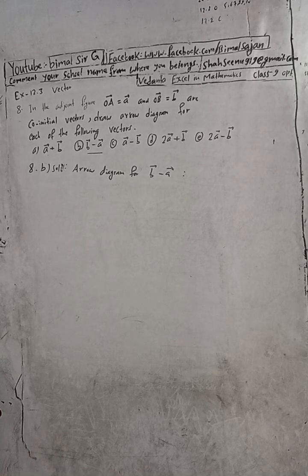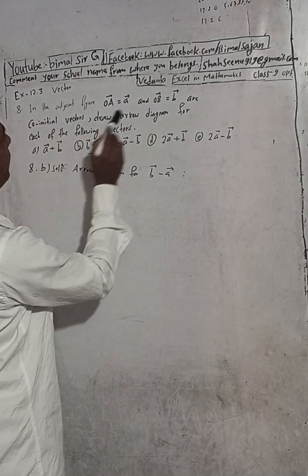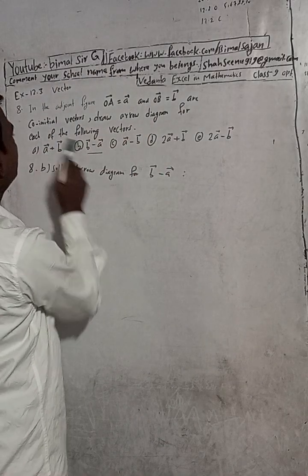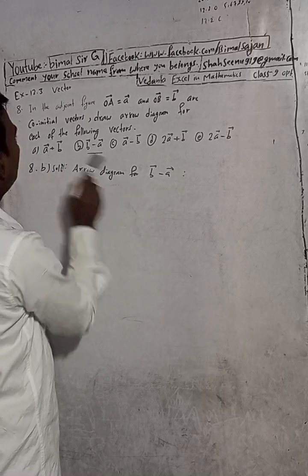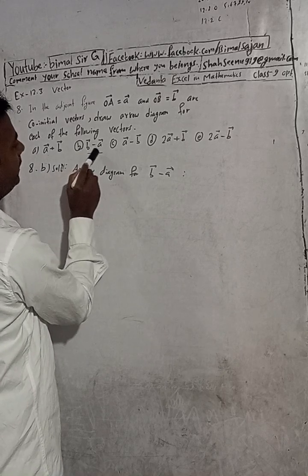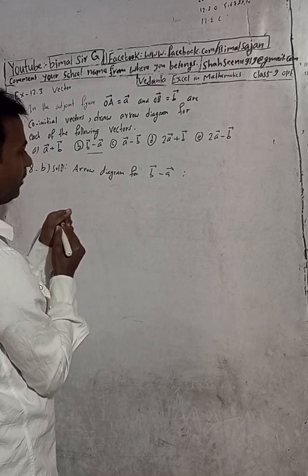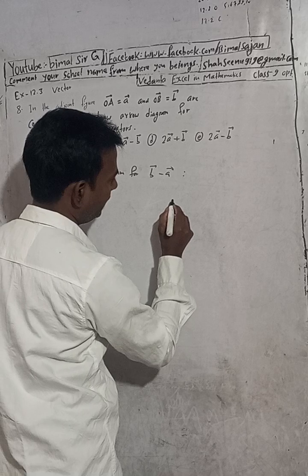Okay, this is question number 8B. Now we have to draw an arrow diagram. Draw arrow diagram for each — so we have to draw this A number, now arrow diagram for B number. That is solution B: B vector minus C. For this also, what you have to do first of all is draw a parallelogram.